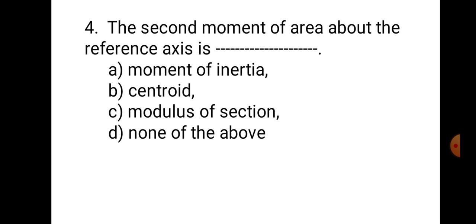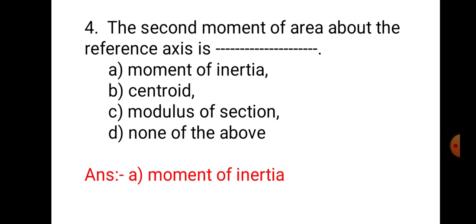Question number 4. The second moment of area about the reference axis is: A. Moment of inertia, B. Centroid, C. Modulus of section, and D. None of the above. We saw that the first moment of area is known as centroid. If you again take the moment of the moment of area, that is known as the second moment of area, and that is nothing but the moment of inertia. Hence, the correct answer is A. Moment of inertia.